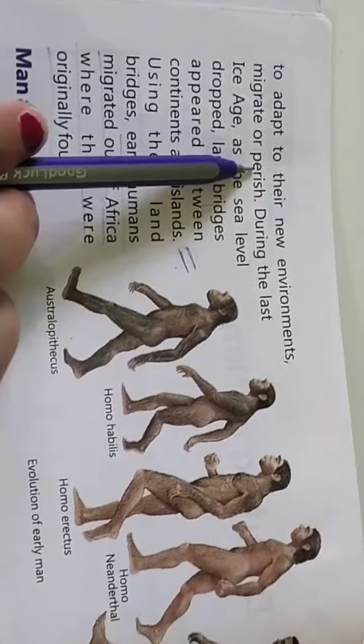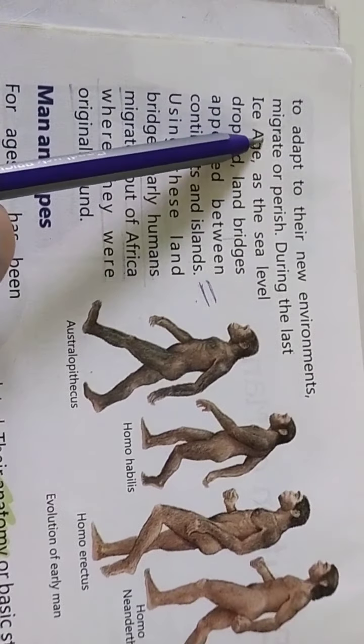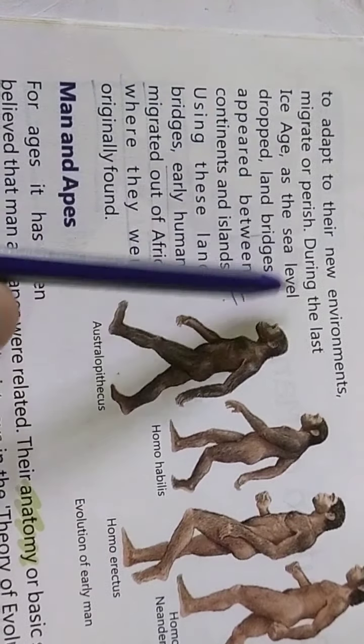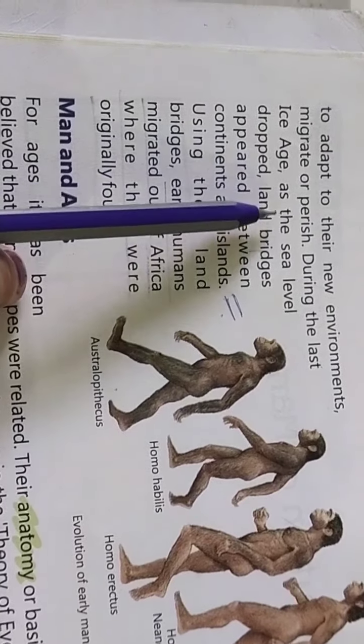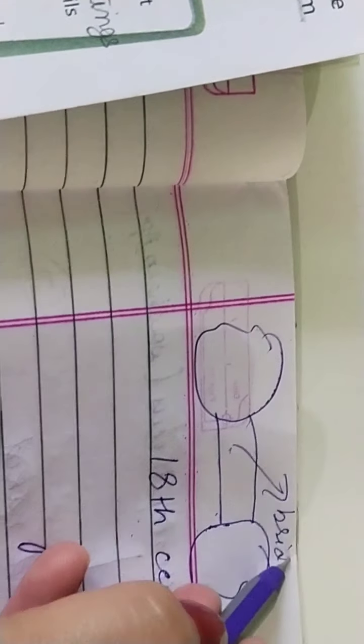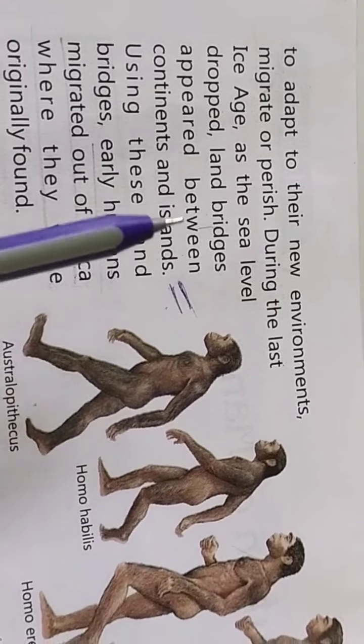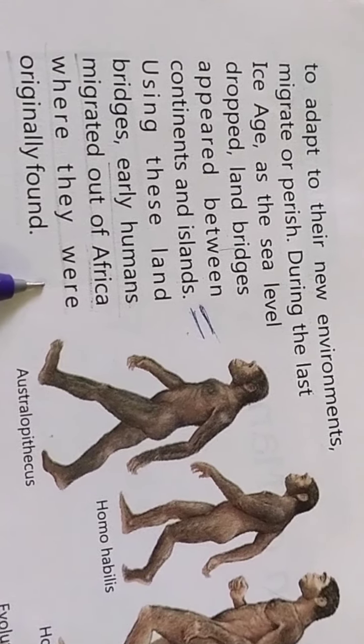Because of cooler temperature, early humans either had to live in that new environment which was not suitable to them, or they had to migrate. Underline the word migrate — migrate means moving from one place to another. During the last ice age, as sea level dropped, water became very less, and land bridges were made between islands and continents. Early humans were first found in Africa — that was their native place — but because of these climatic changes, they had to move from Africa.